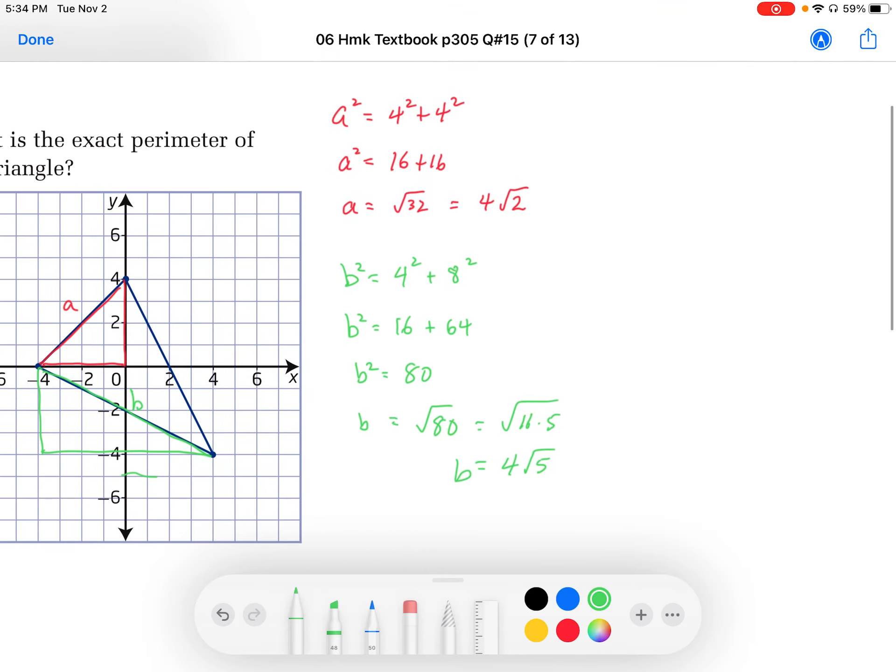And then lastly, we'll call this one C. And we can use this triangle out here. And it looks like it's the same triangle. C squared is equal to the horizontal is 4 squared. The vertical I'm going to count as 8 squared. So C squared is equal to 16 plus 64. So we're going to get the same square root 80.